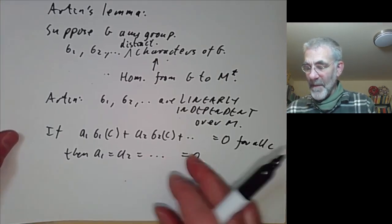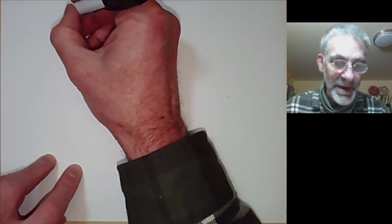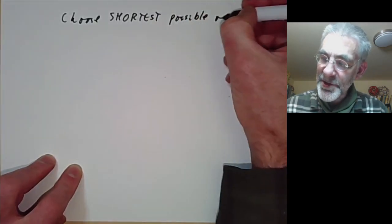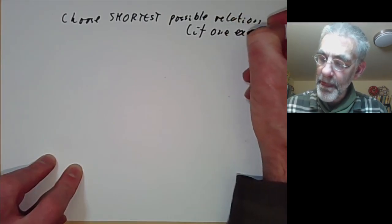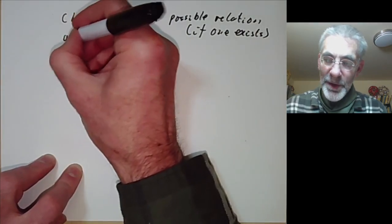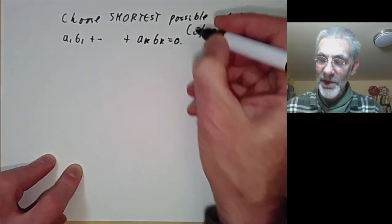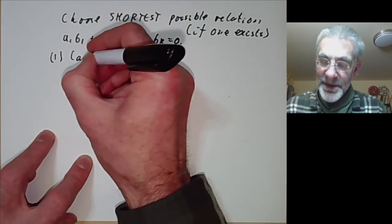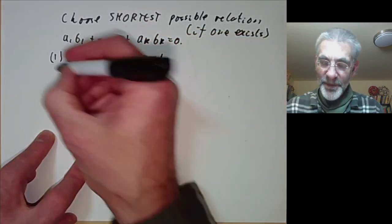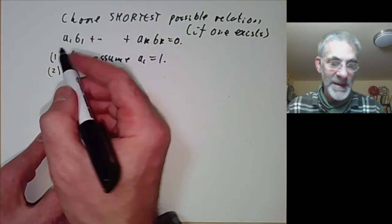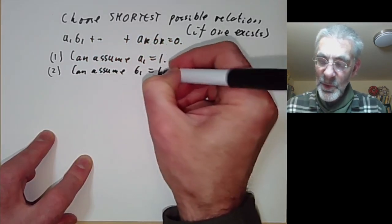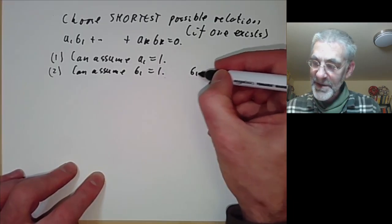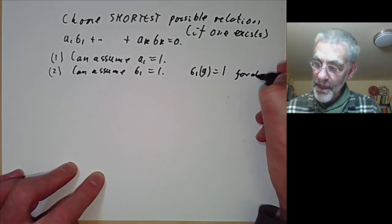To prove this, suppose there is a linear relation among the characters; choose the shortest possible such relation. Since it's the shortest, all the a_i are non-zero, so we can divide by a_1 and assume a_1 = 1. We can also divide all the characters by sigma_1, so we can assume sigma_1 equals the trivial character — the character such that sigma_1(g) = 1 for all g.